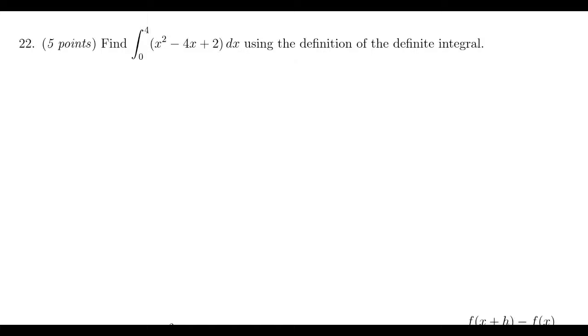In this video, we'll provide the solution to question 22 for the practice final exam for math 1210, in which case we're asked to evaluate the definite integral from 0 to 4 of x squared minus 4x plus 2 with respect to x using the definition of the integral. By definition integral, we're talking about the limit of a Riemann sum. We can use the fundamental theorem of calculus to check our answer, but you won't get any credit for using FTC. You do need to use the definition, that is limits of Riemann sums.